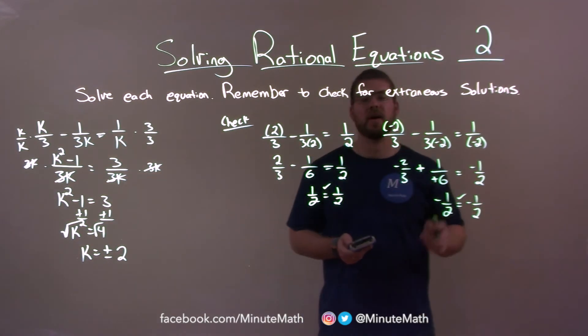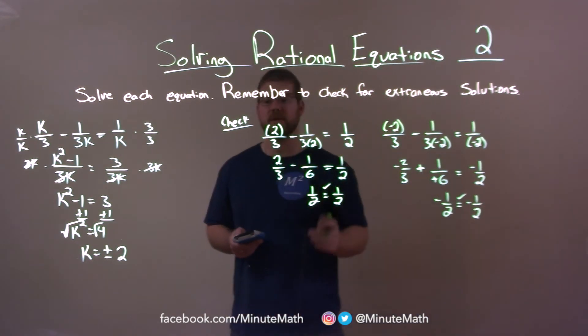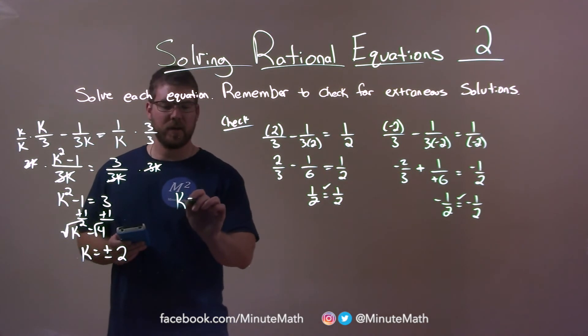So, for both of these, the left and right-hand side were equal when we plug in 2 and negative 2. So, our values for k are negative 2 and positive 2. And there is our final answer.